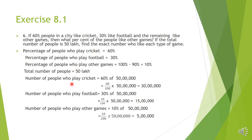Now we find the number of people who play each game. Number of people who play cricket is equal to 60% of the total number. Total number is 50 lakh. So 60% means 60 by 100 into 50 lakh. The two zeros cancel, leaving 50,000 and 60. Multiplying, we get 30 lakh people.